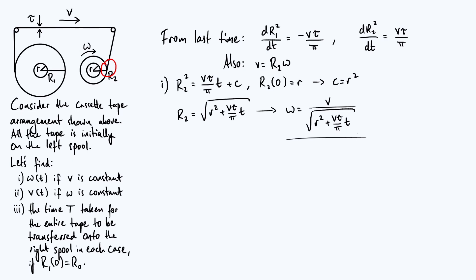If it doesn't decrease over time, your tape is going to be speeding up as time goes on, and your music is going to get faster and higher pitched. Now remember I also asked for the time capital T taken for all the tape to go from the left spool to the right spool. To find that, we have to think about what the value of R2 at that final time capital T is. At the final time, all the tape that was initially on the left spool is on the right spool, and therefore the final radius of the right spool is the same as the initial radius of the first spool. Therefore R2 at capital T equals R0.